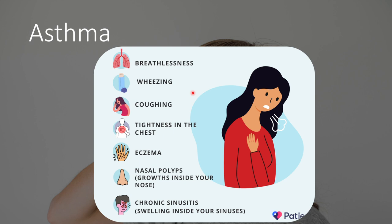In terms of history, patients may have eczema — this is atopy. They might have nasal polyps, which make breathing more difficult, and chronic sinusitis. This history of atopy is somewhat pathognomonic in asthma and can contribute to its development.